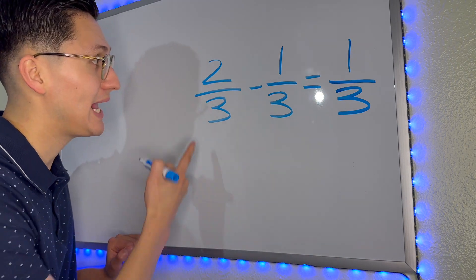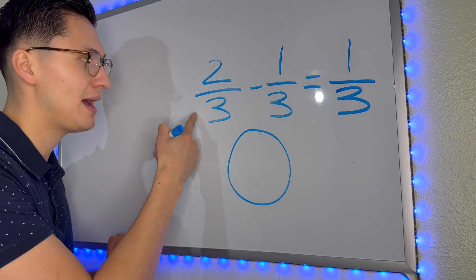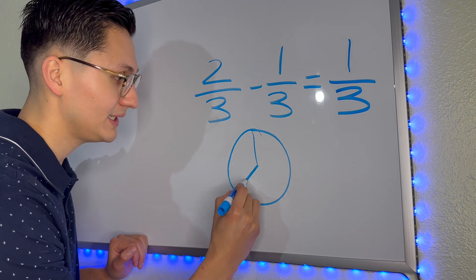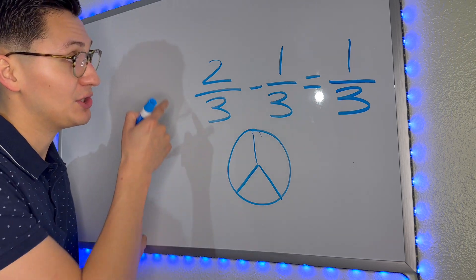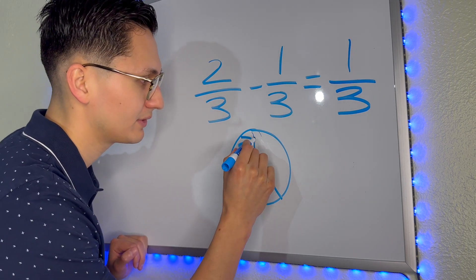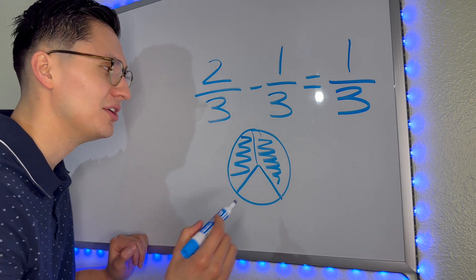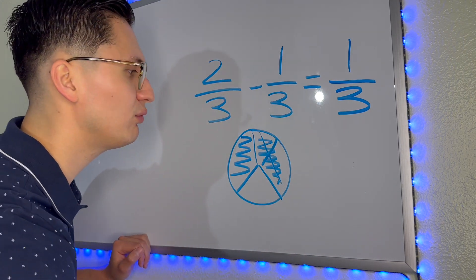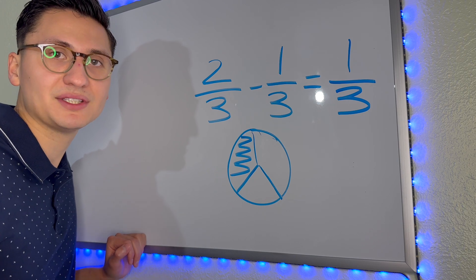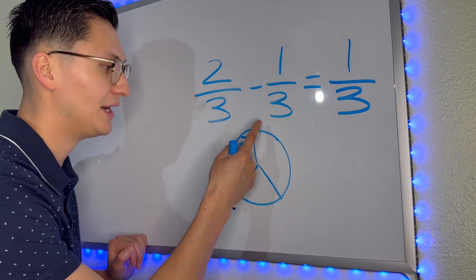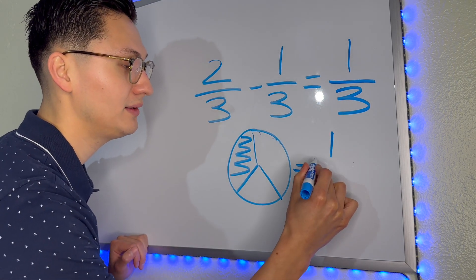Now let's do it with a picture. We have a pizza. How many parts are there? The denominator tells us — it's cut into three equal parts. And how many of those parts do we have? We have two — one, two. And let's say your best friend comes over and says he wants a slice, so he eats one slice. We get rid of one slice. So how many slices do we have left? We have one slice out of three — one part out of three parts, which is the same as one-third.